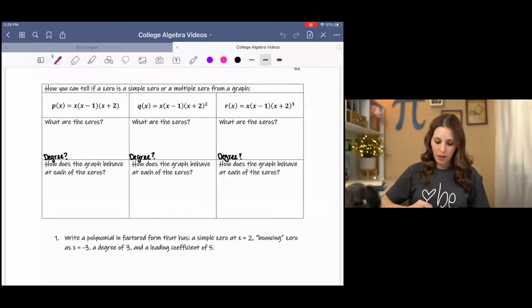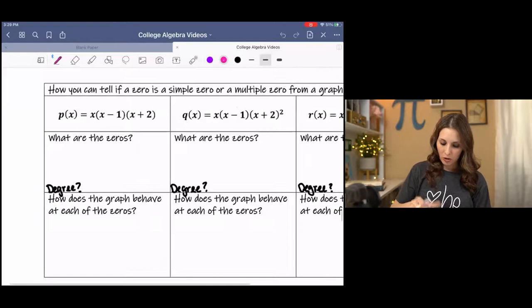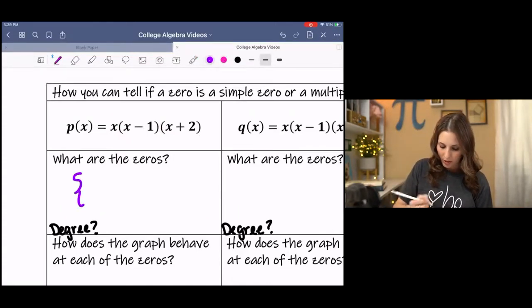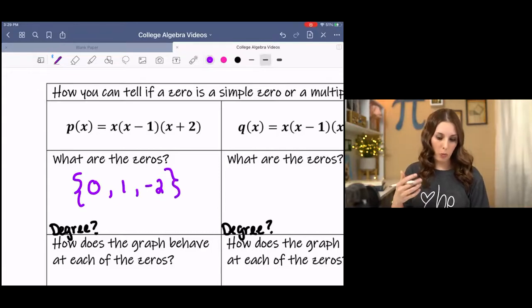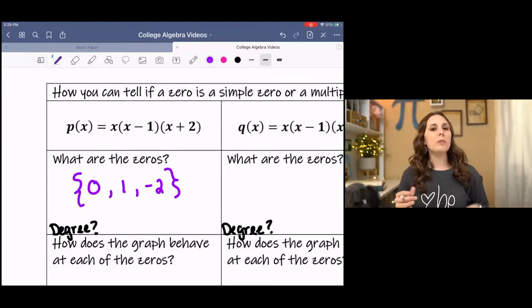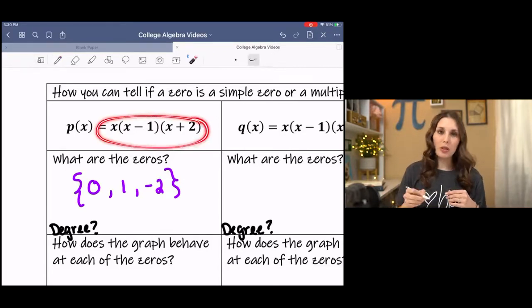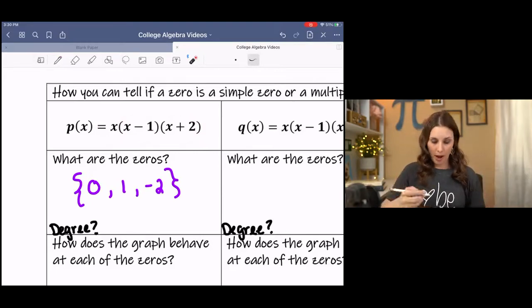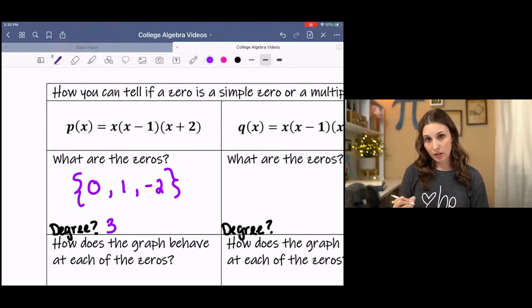We know from the zero product property that if we split up each factor and set each one equal to zero, then we can solve each factor separately and we get solutions or zeros at zero, one, and negative two. Now I kind of rushed through that because I've already taught it, but I've set each factor equal to zero and solved each one to get those solutions. And then I also want to know a little bit about the degree of the polynomial. And if you remember, the degree is the highest exponent. Now this is all factored out. If we were to multiply it all together, then the biggest exponent we would have would be x times x times x, which is x to the third. x to the third has a degree of three.